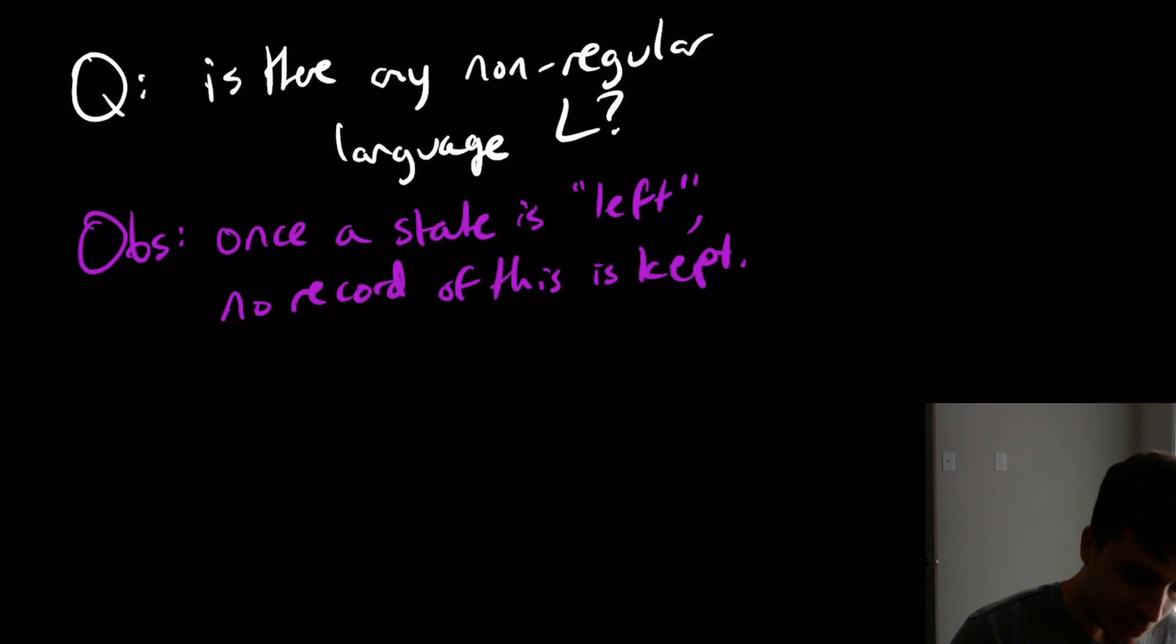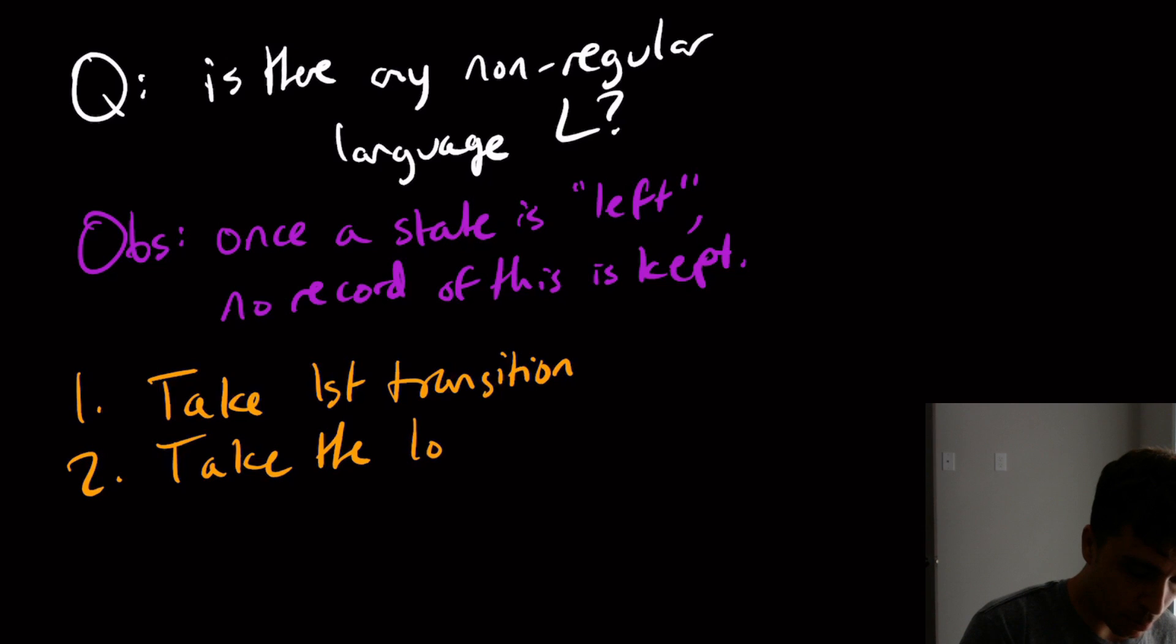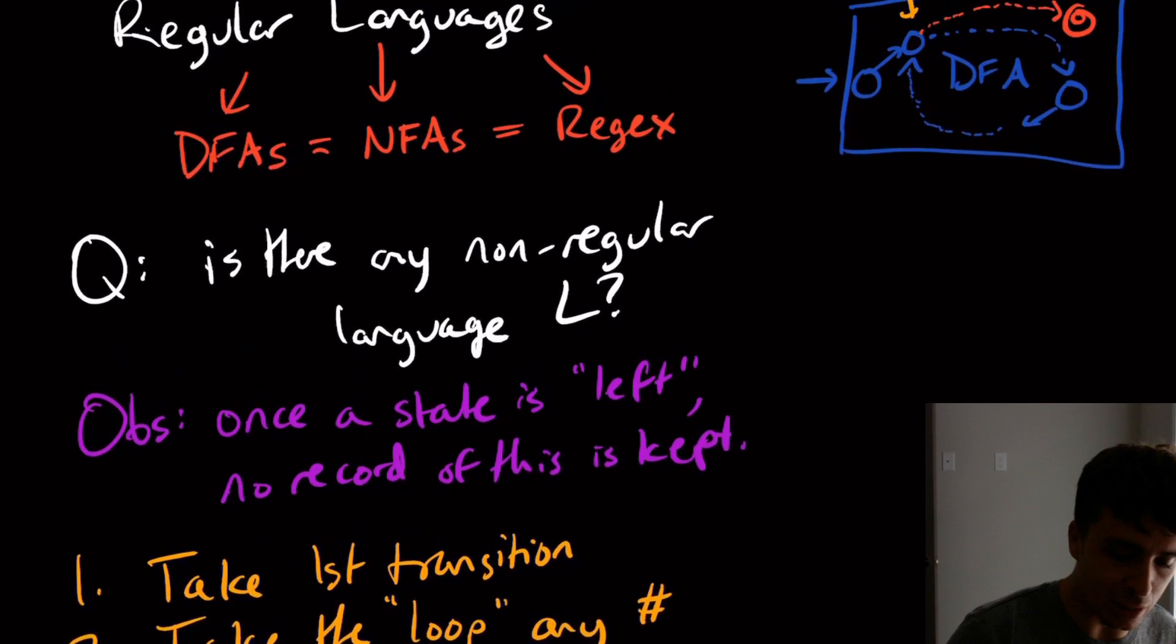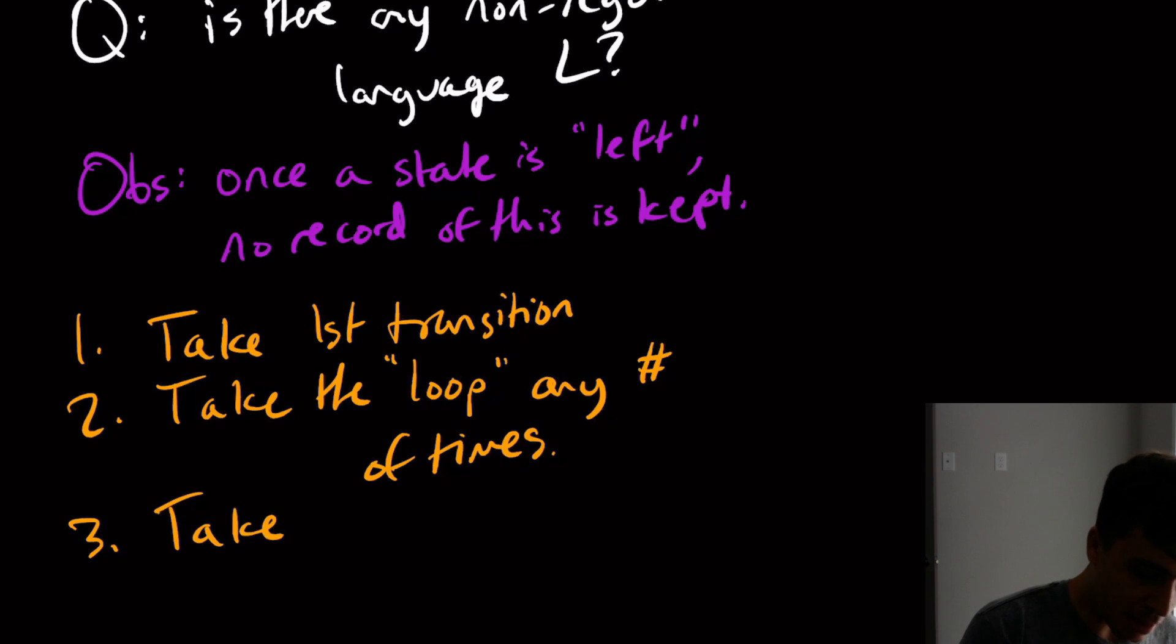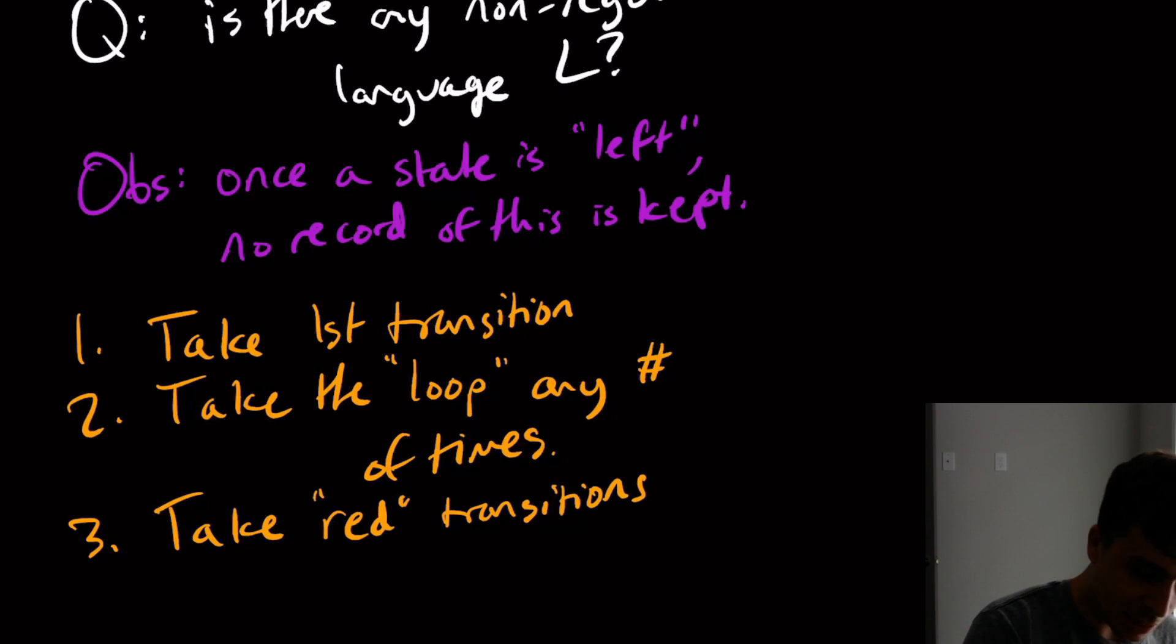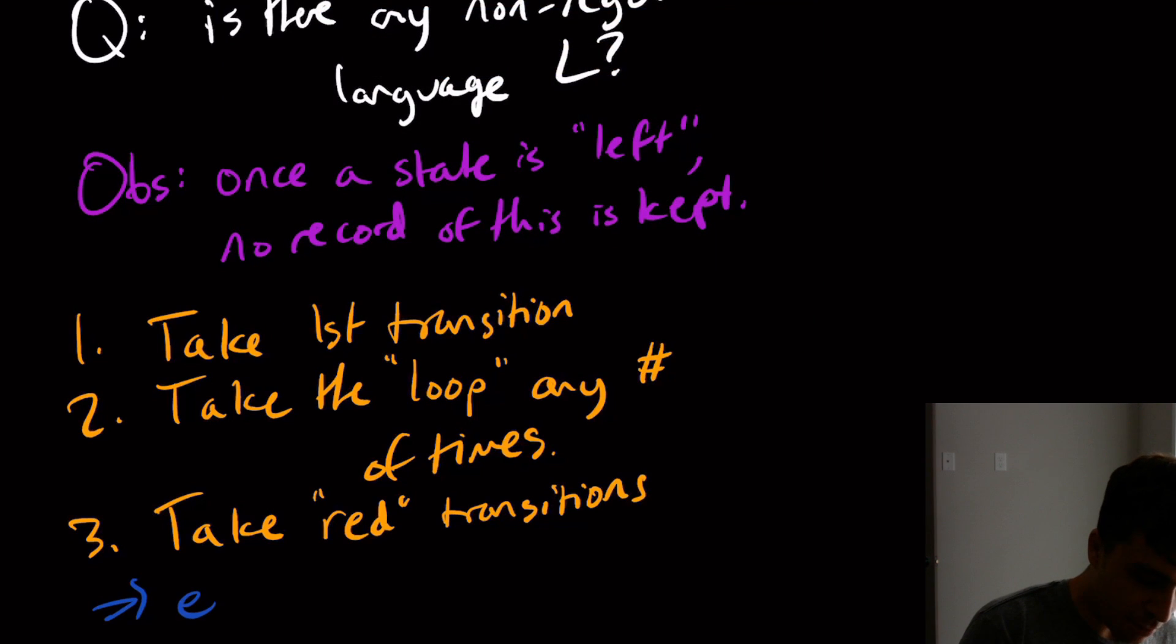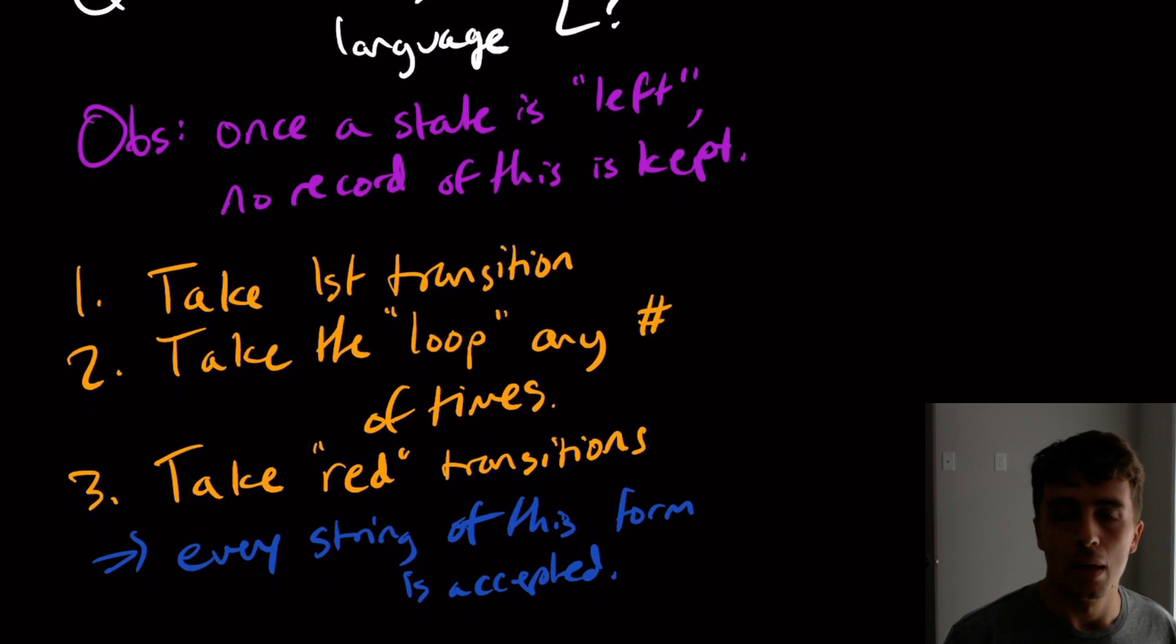So if we, let's just say that we take the first transition. And then we take the loop, that particular loop, any number of times, we saw we can do that one, zero times if we wanted to, but we can do it any number of times if we want. And then, and then take the red transitions. And then what does that tell us? That tells us that every string of this form is accepted.